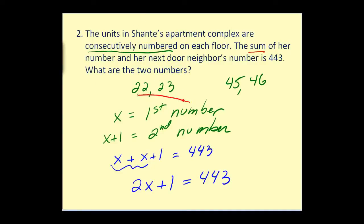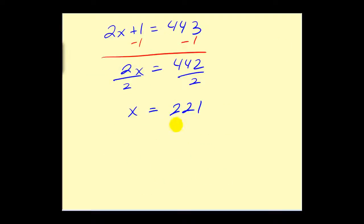So we found x or we found the first number. But the second number was x plus one. So the numbers would be 221 and the next one would be x plus one or 222. So those are the numbers we're looking for in this question. Let's go ahead and try another.